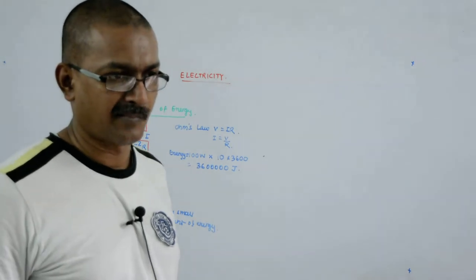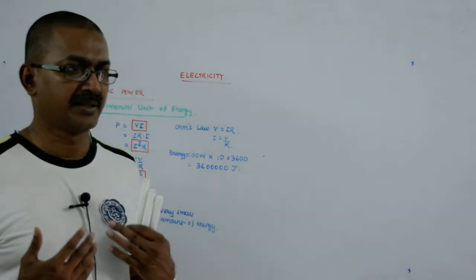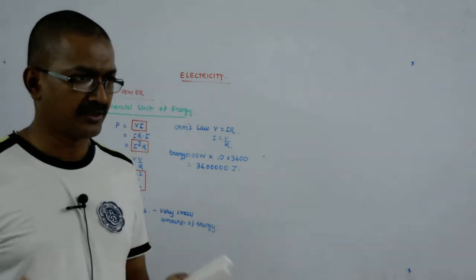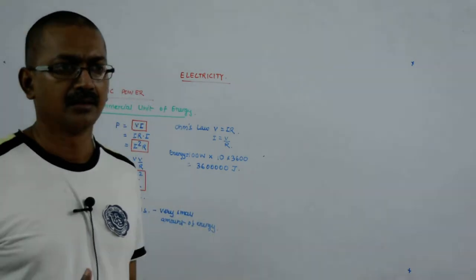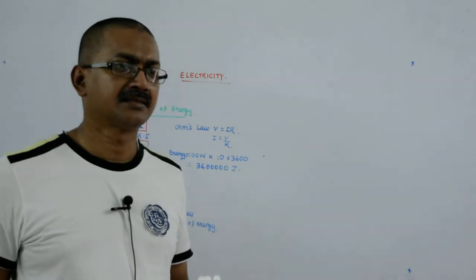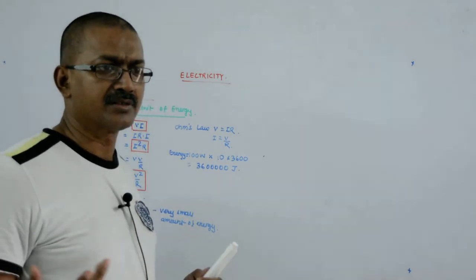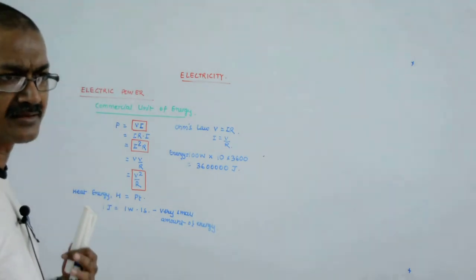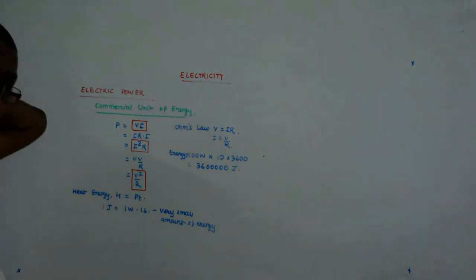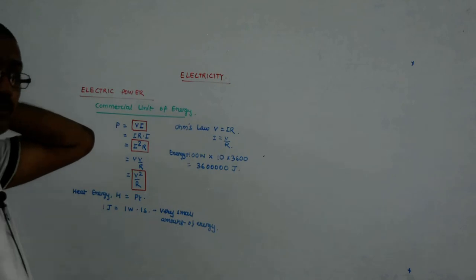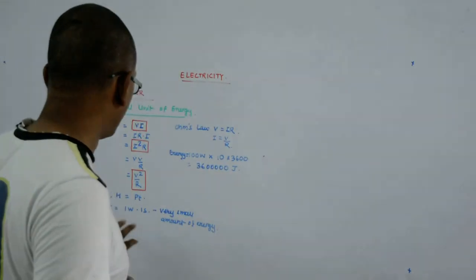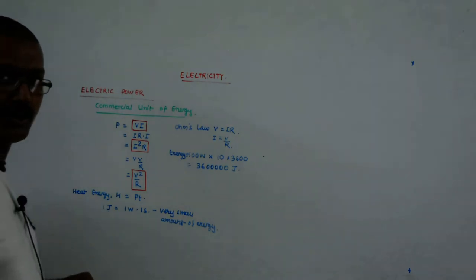Now you can very well understand, with all the ACs and maybe geysers, the ACs in the summer and geysers in the winter and heaters and tube lights and fans and computers and everything in the house is running, maybe 8 to 10 tube lights. The amount of energy that you consume even on a daily basis becomes huge if you measure it in terms of joule.